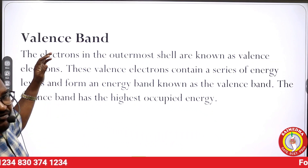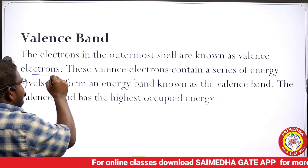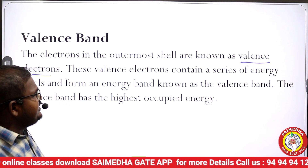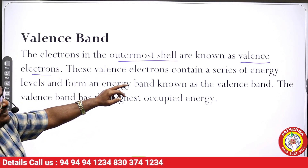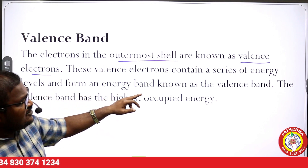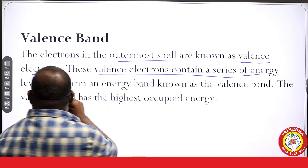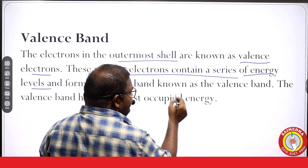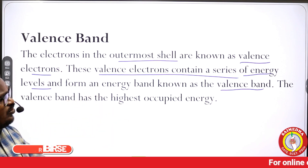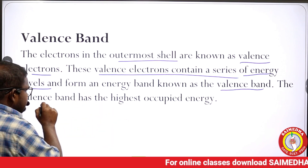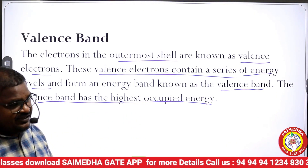What do we mean by valency band? The electrons in the outermost shell are known as valency electrons. These valency electrons contain a series of energy levels and form an energy band known as the valency band. The valency band has the highest occupied energy.